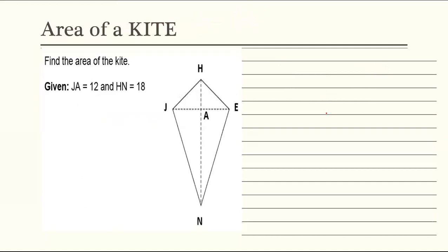Next. What if ganito naman yung given? Find the area of the kite. So JA is 12, ito yung JA. And then HN is 18, so yung kabuoan na to ay 18. Di ba ang formula natin, one-half area ng kite ay one-half D1, D2. So dito, sa part na to, yung JA lang binigay.